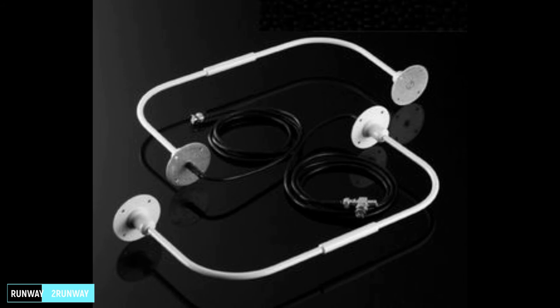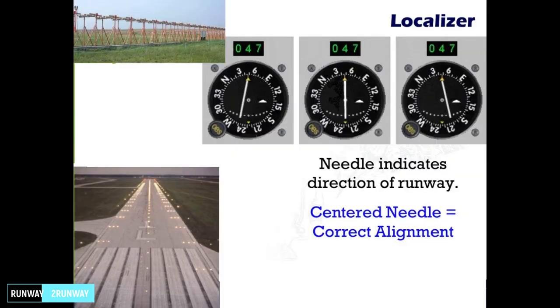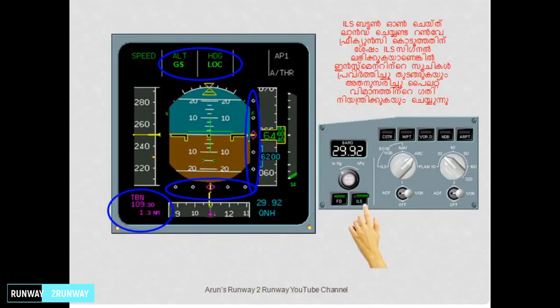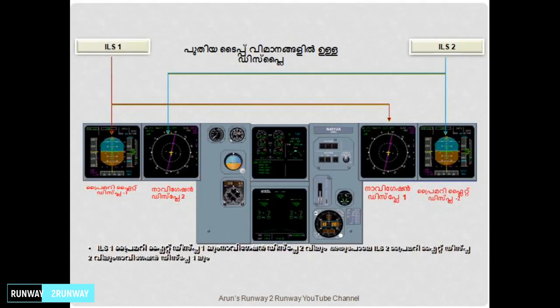This is the localizer signal beam. This is the same instrument. We are using the localizer signal beam. This is the receiver. We are using the ILS receiver. When we switch to the hand side, this is the localizer signal beam.